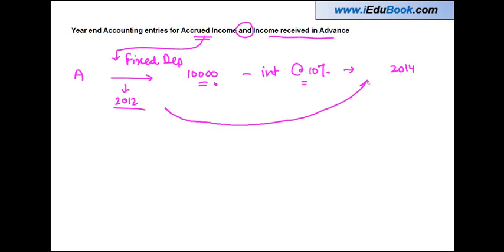While the deposit was made in 2012, so the entire amount which is the principal plus the interest from 2012 to 2014 is going to be paid in 2014.